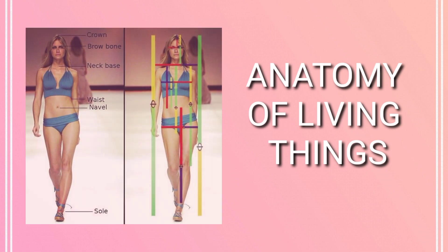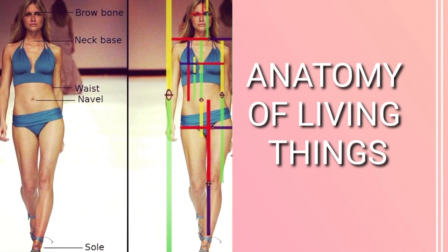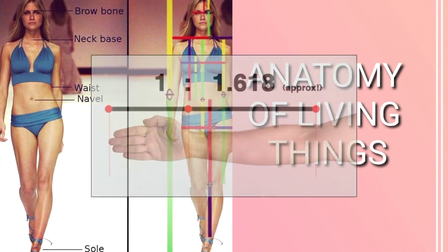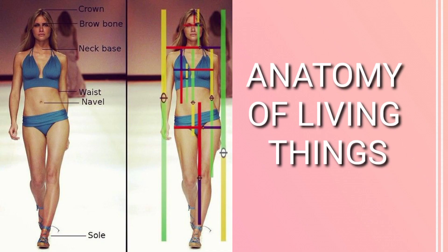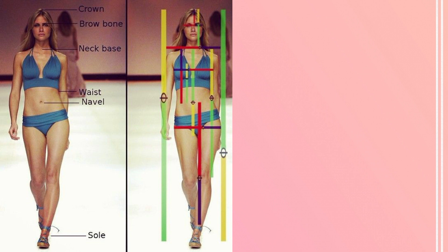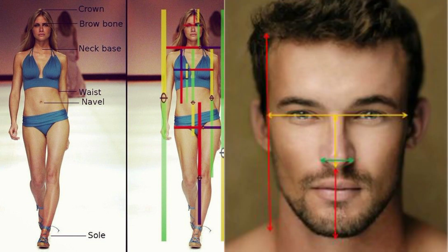Number two: anatomy of living things. Artists and architects have concluded that the golden ratio embodies the ideal proportions of the human body. The ratio of the forearm to hand is the golden section, as the ratio of your forearm to your hand is 1.618. Other examples include: the height of a person divided by the distance from belly button to ground, the distance from the top of the head to the shoulder divided by the distance from the top of the head to the chin, and the length of the face divided by the width of the face.